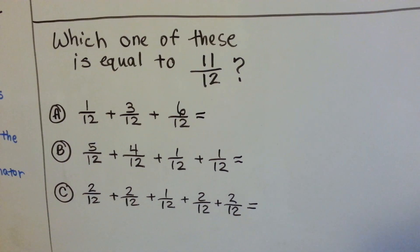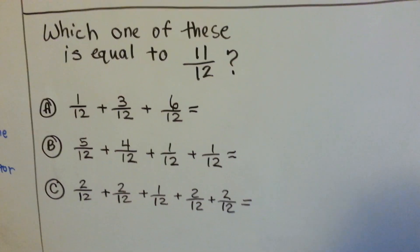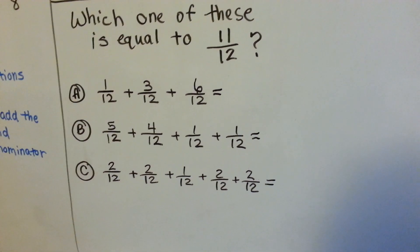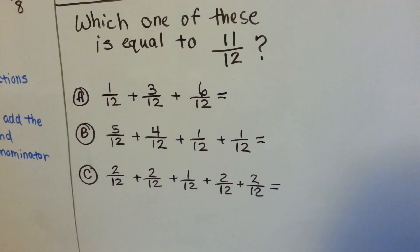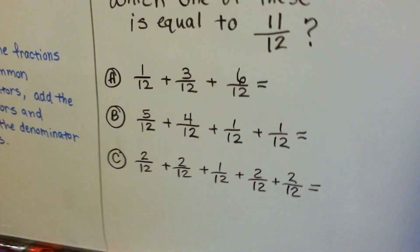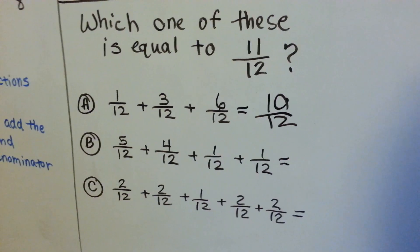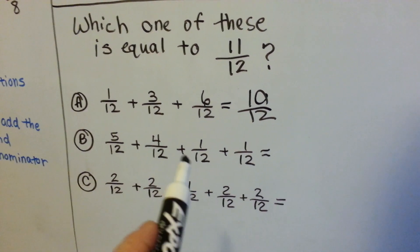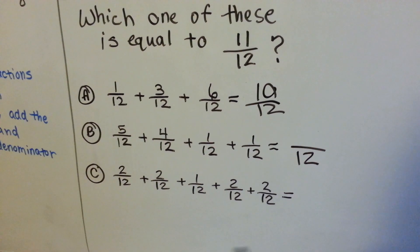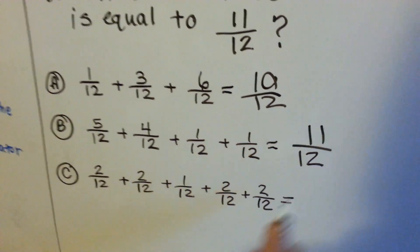Here's a bonus: which one of these is equal to 11 twelfths? Let's look at option a: 1 twelfth plus 3 twelfths plus 6 twelfths. We add the numerators and slide the denominator over — 1 plus 3 is 4, plus 6 is 10 twelfths. That's not the right one. How about option b: 5 twelfths plus 4 twelfths plus 1 twelfth plus 1 twelfth. 5 plus 4 is 9, plus 1 is 10, plus 1 is 11 — 11 twelfths. There it is! If you said b, you were right.